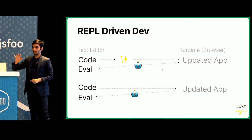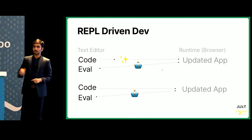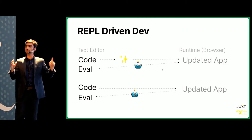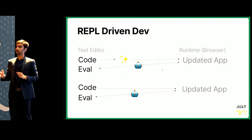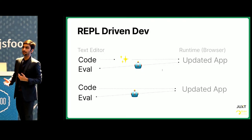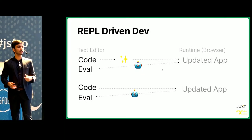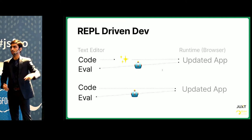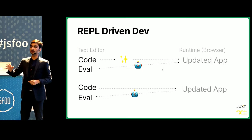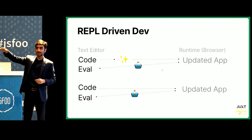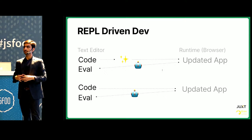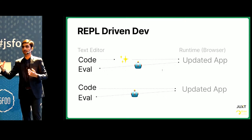With ClojureScript and Clojure, you have a special element sitting between your runtime and your browser called the REPL. What this lets you do is talk to your runtime without interacting with it. You don't perform actions inside the runtime — you just evaluate code inside your editor and talk to the runtime.